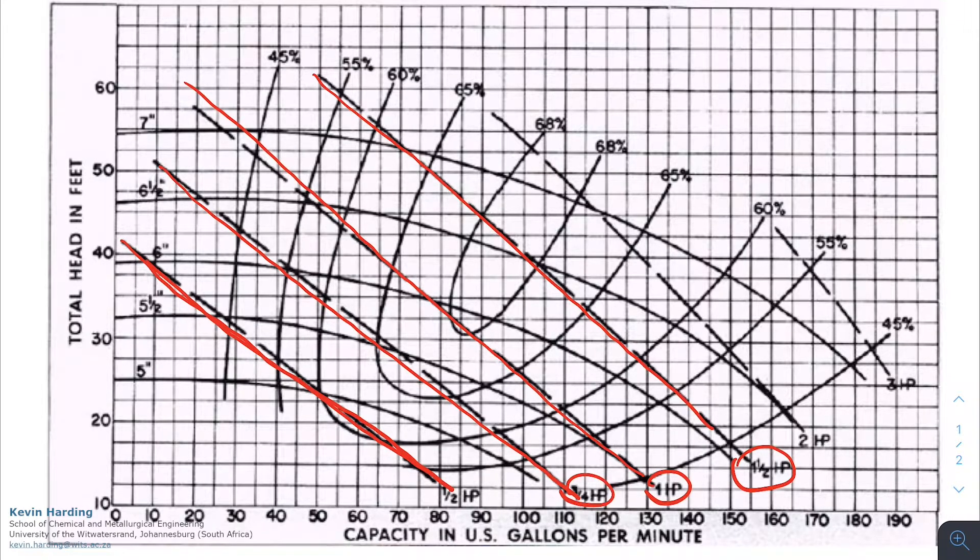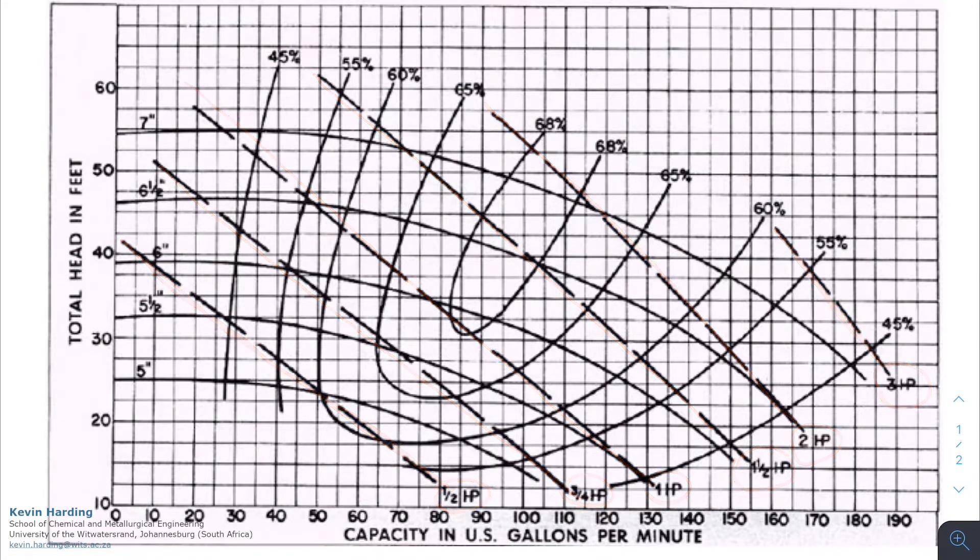And at the bottom they give us values of one hp, half, three quarters. So this is the horsepower or the power that would be required to deliver the performance that we are looking for at our specific operating point.